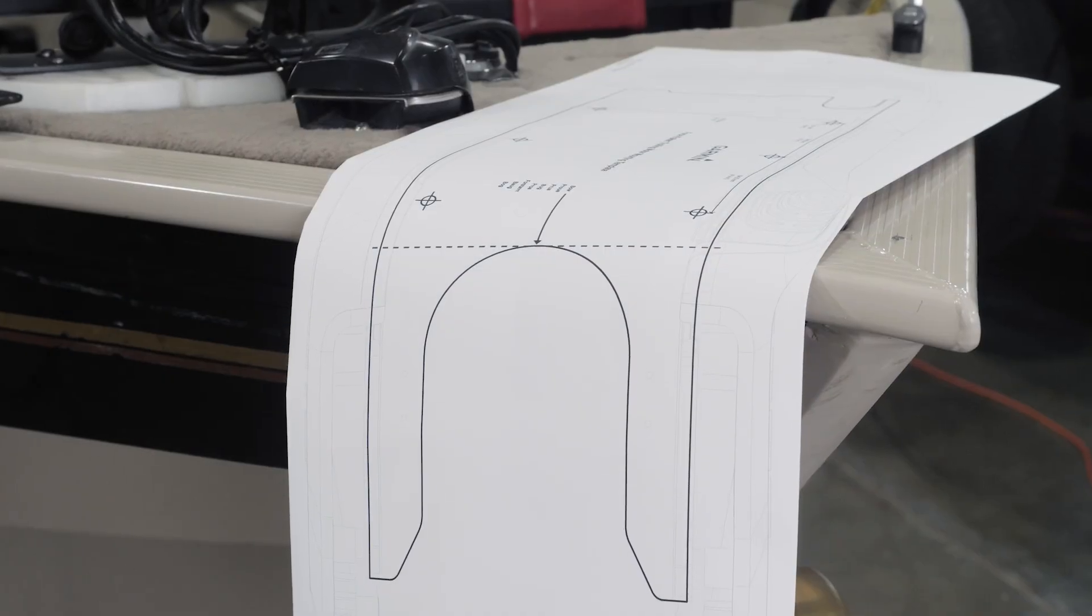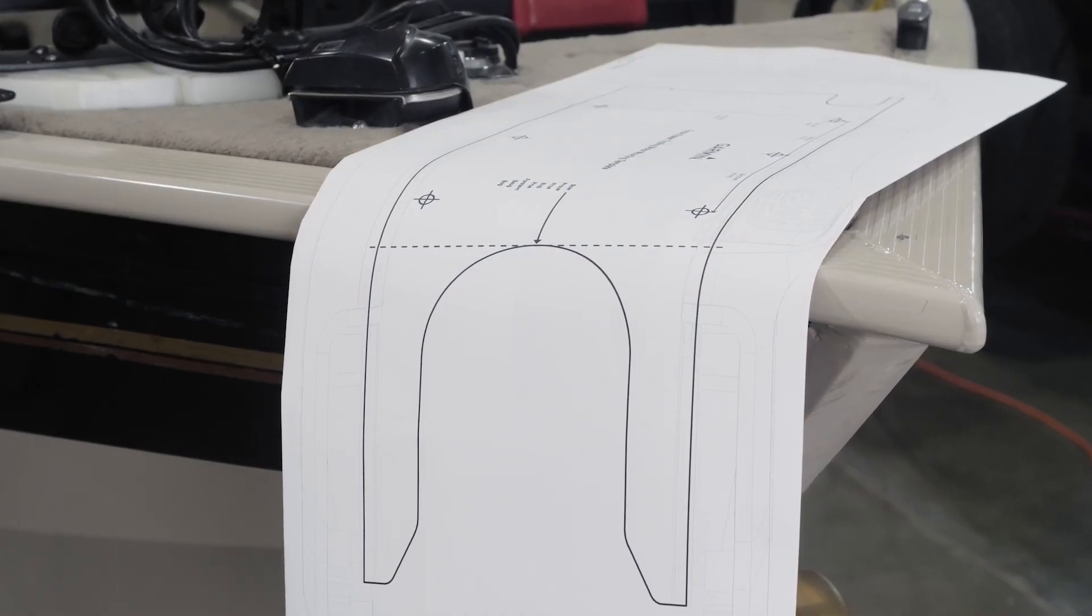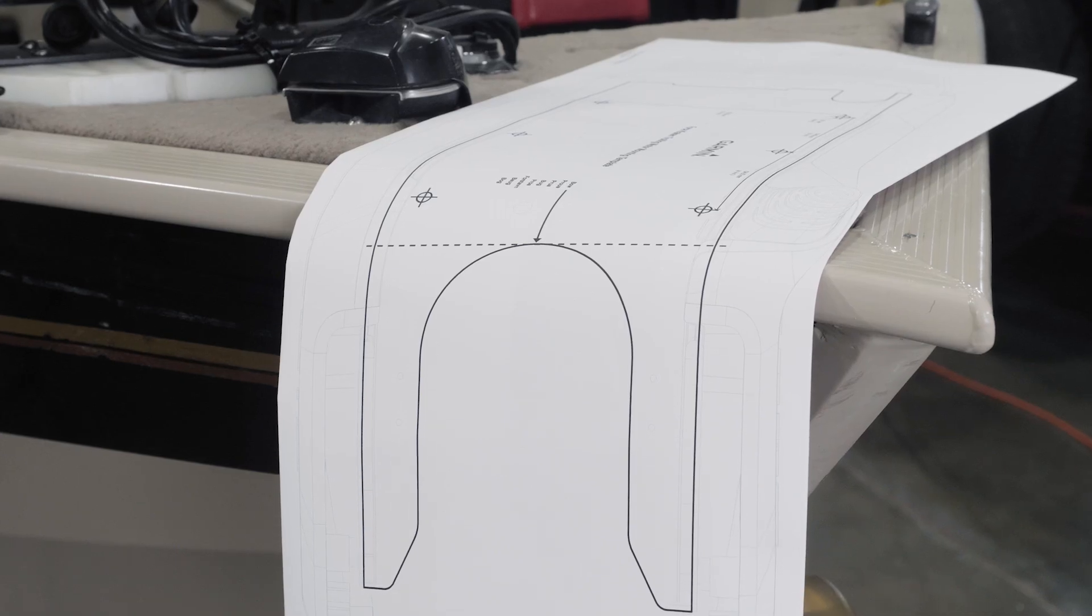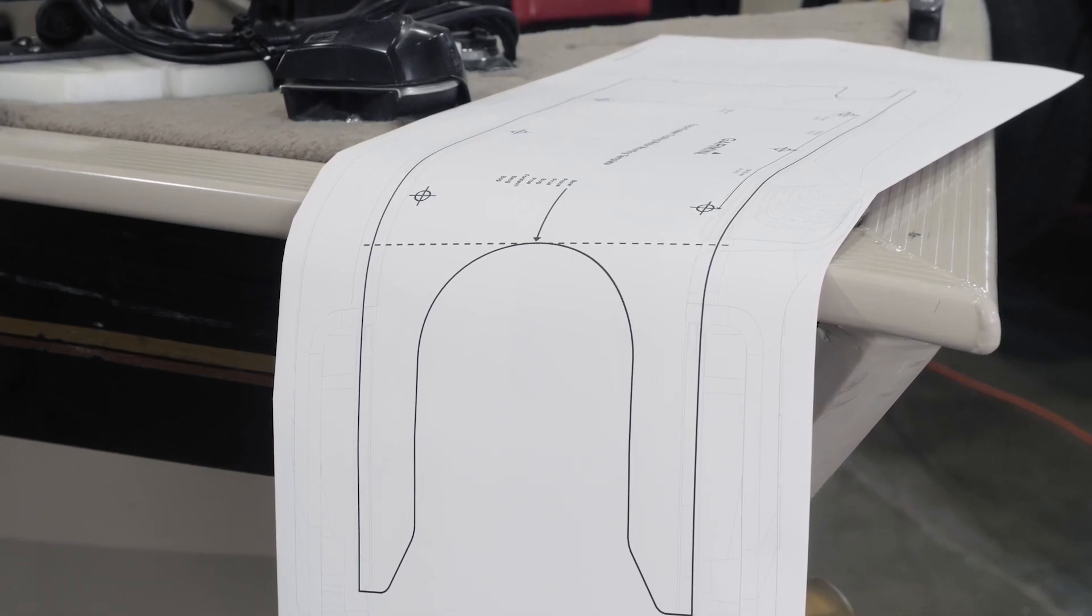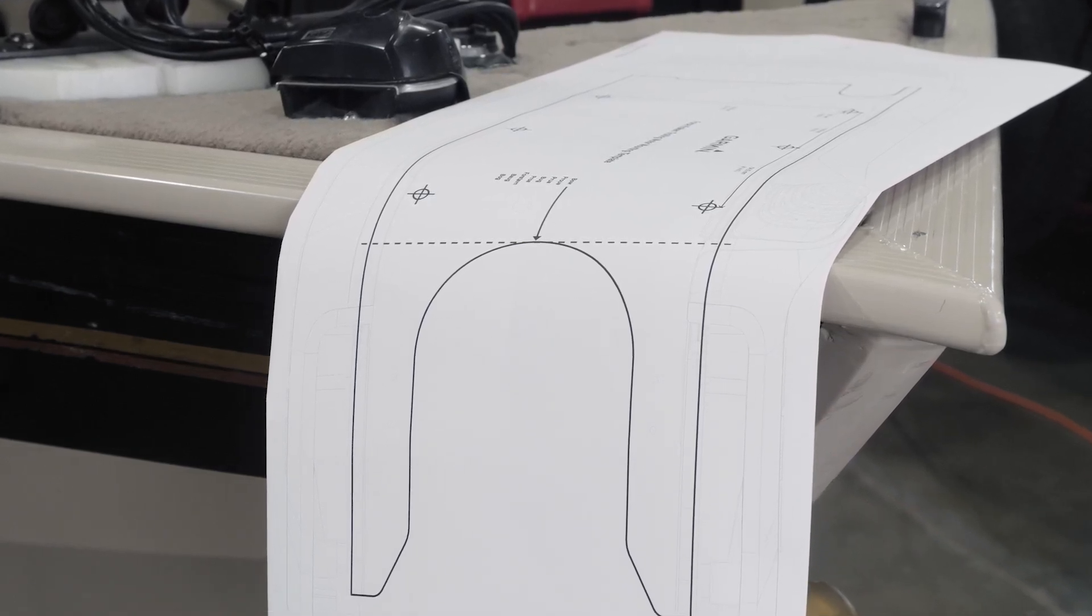All six holes will need to be used to mount the trolling motor. Follow the link in the description for guidance on approved mounting alternatives if your boat shape does not allow you to use all six holes.